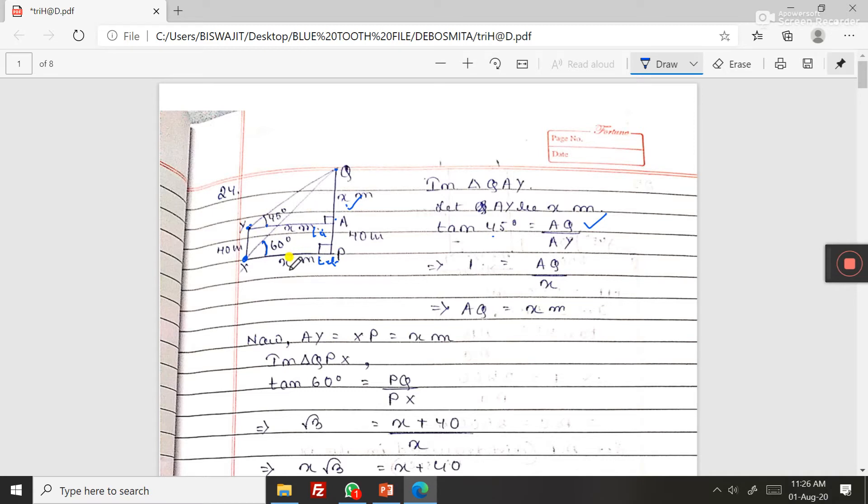Then rectangle, this is x, this also will be x, so this also AQ also becoming x. Now see, this is x, this is x, this is x.